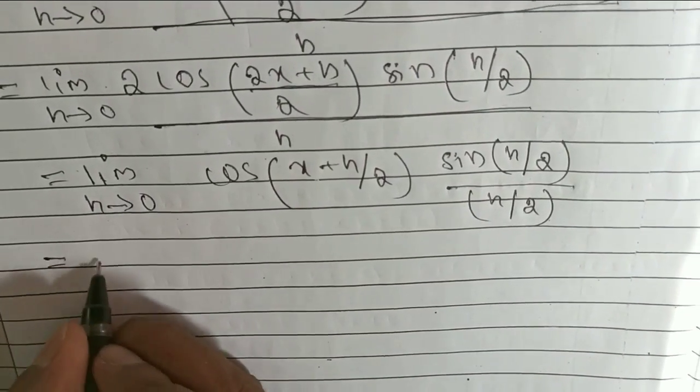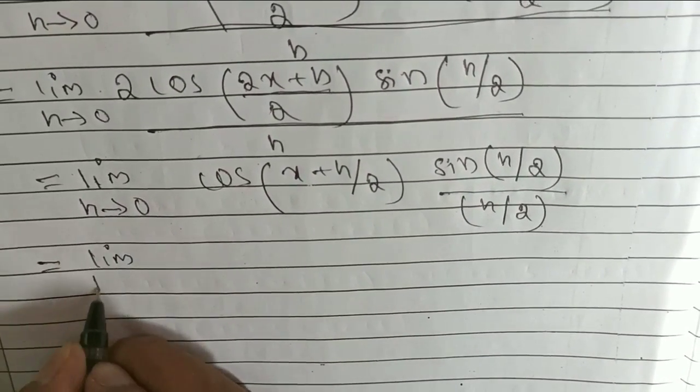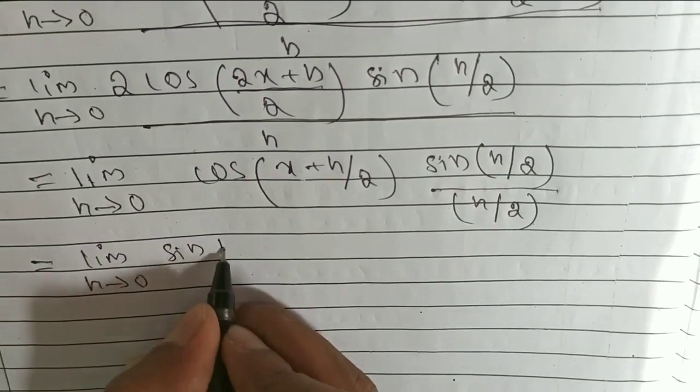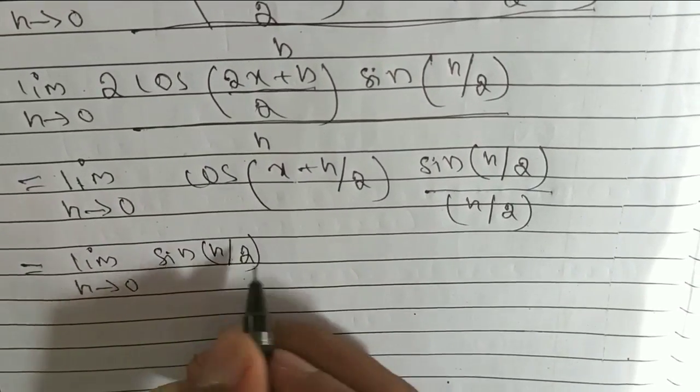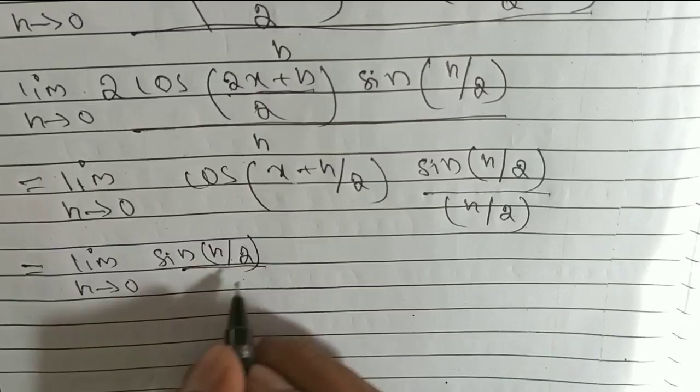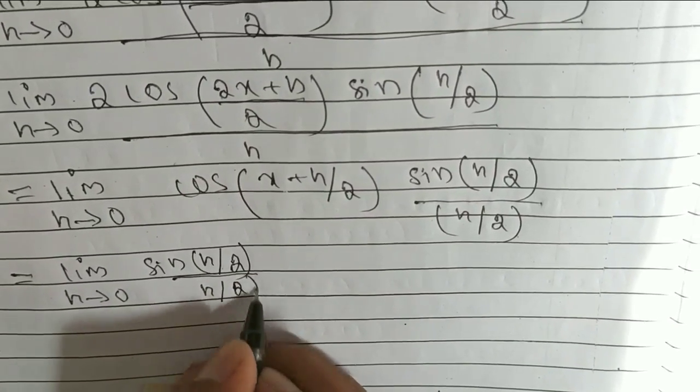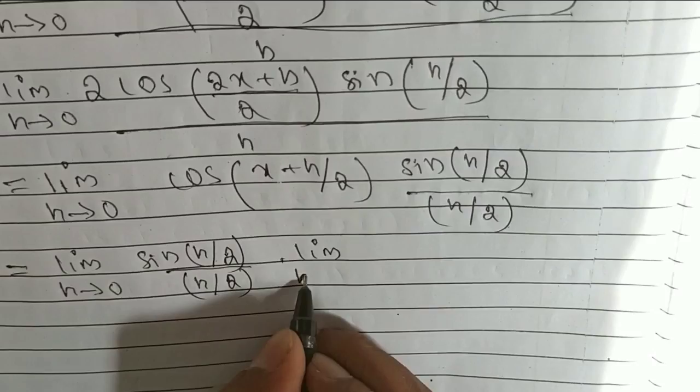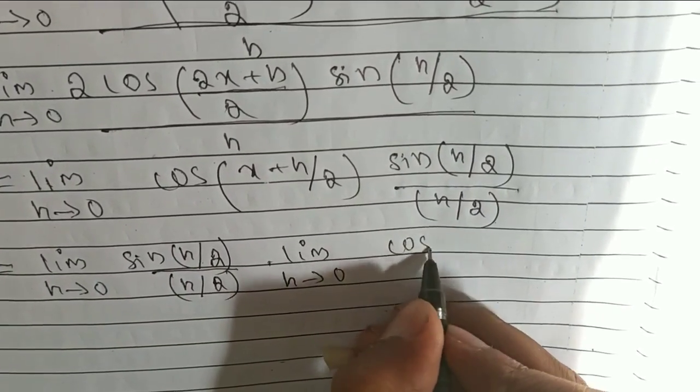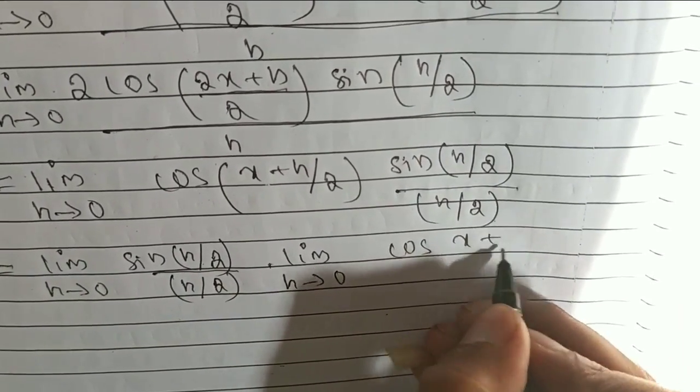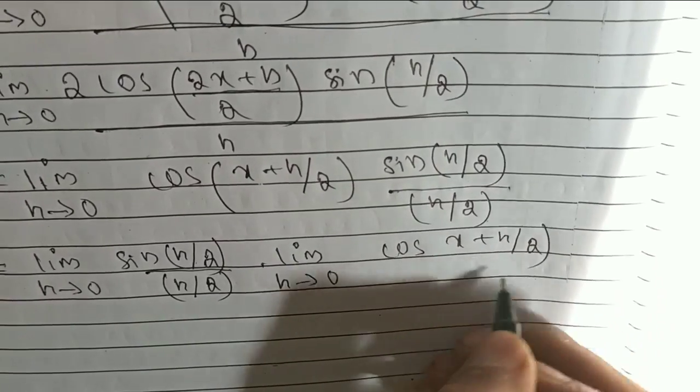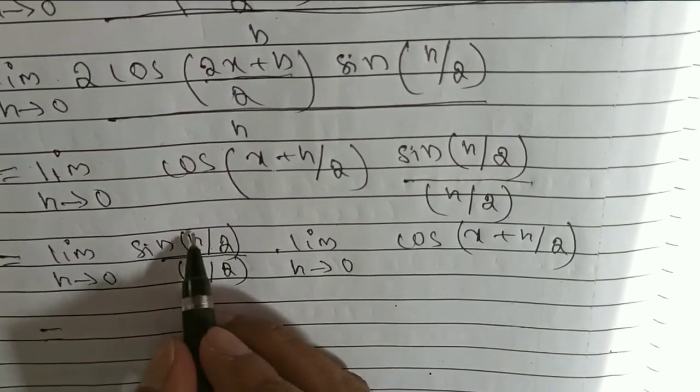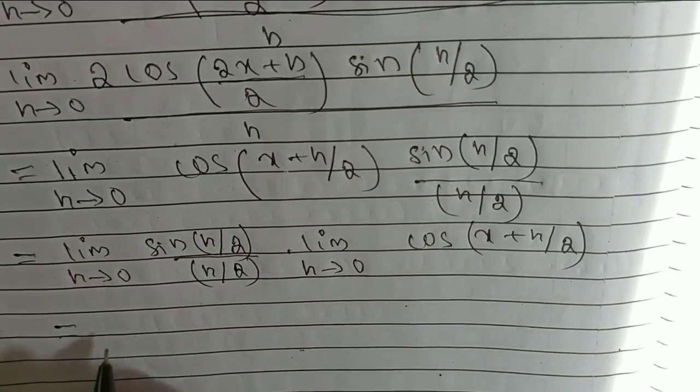Now limit h tending to 0, we know that sin of h by 2 by h by 2 is 1, limit h tending to 0 into cos of x plus h by 2. This whole term will become 1 into cos of x plus h by 2.